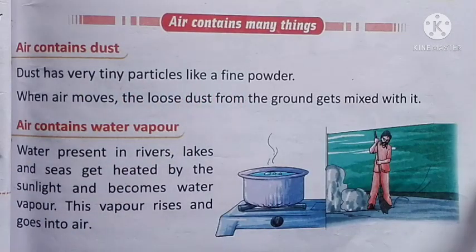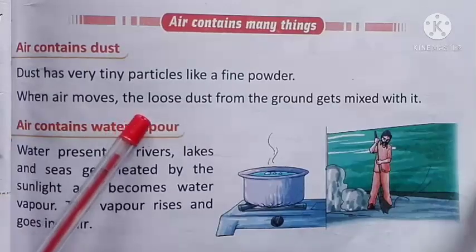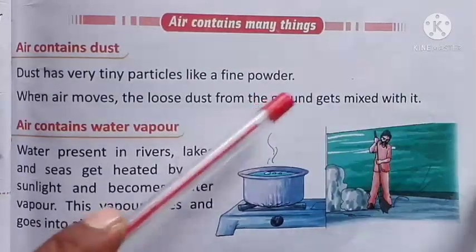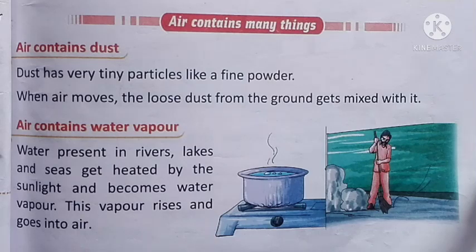धूल में बहुत छोटे कण (tiny particles) होते हैं। When air moves, जब हवा चलती है, the loosest dust from the ground gets mixed with it. यानि कि जब हवा चलती है, तो जमीन से ढीली धूल — जो ऊपर की मिट्टी होती है — वह हवा के साथ मिल जाती है।